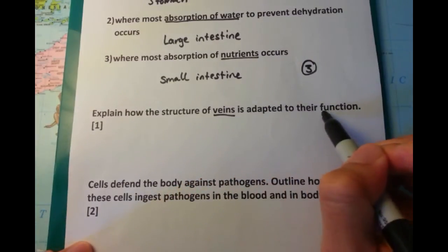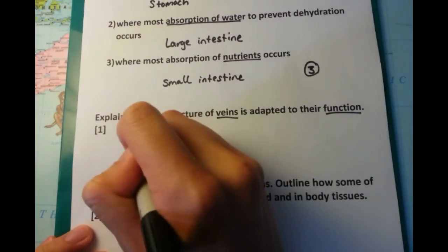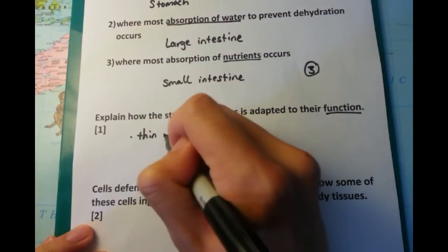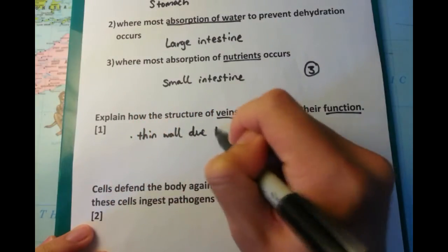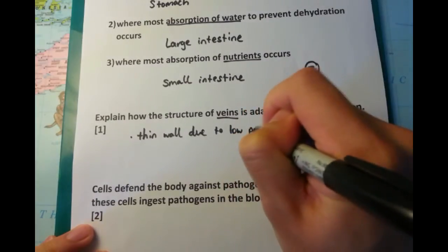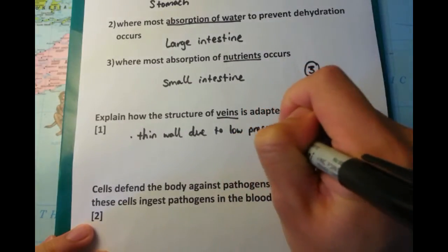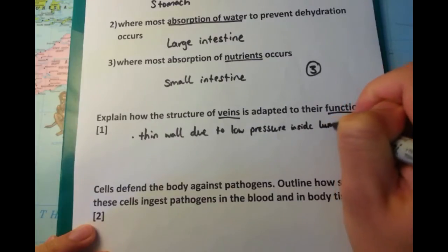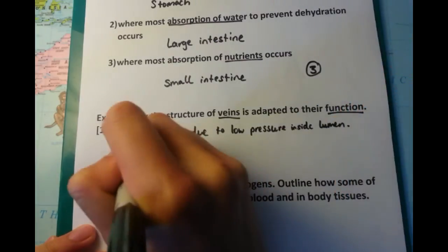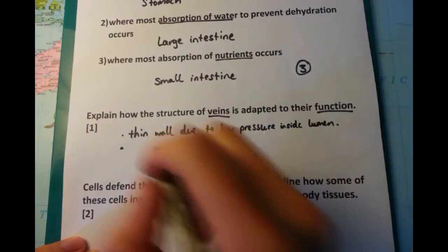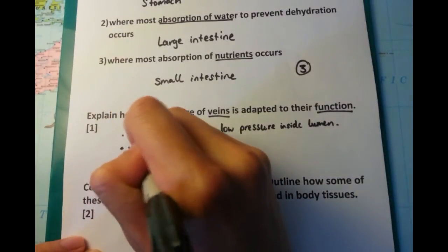Explain how the structure of veins is adapted to their function. I'm going to talk about three main points. Firstly, they have a thin wall because they have a relatively low pressure of blood inside them. Remember, the blood is returning from the body and travelling back to the heart, so the main forceful pumping action of the heart has already been used up as it goes out from the heart to the arteries.